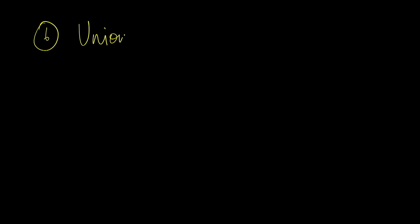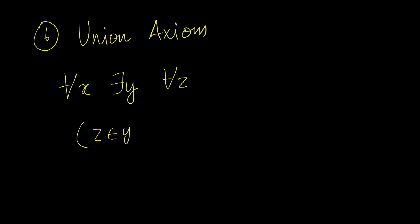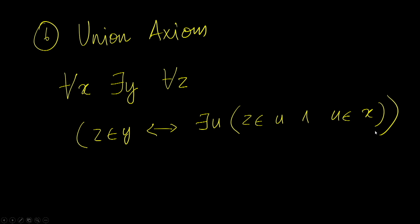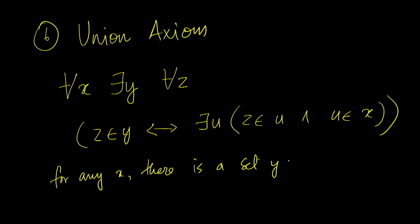The sixth axiom is the union axiom. The union axiom says that for every x there exists a y such that z belongs to y precisely when there exists a u so that z belongs to u and u belongs to x. In other words, given any set x, we can construct a set y which will contain precisely the members of members of x — that is, for z to belong to y it has to belong to some u which in turn belongs to x.